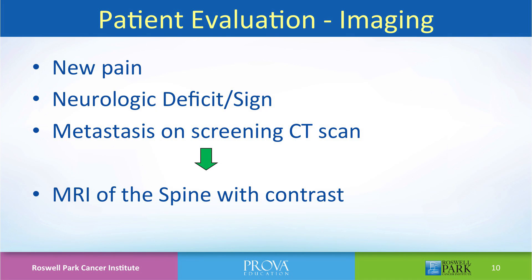To recap: patients with a history of cancer and new pain in their neck or back, and patients with a history of cancer and a new neurologic deficit or sign or symptom, should undergo MRI imaging of the affected area. Also, patients who undergo screening CT scans for their primary disease — if lesions are seen anywhere along the spinal column on those screening images — should then be further evaluated and clarified with an MRI.